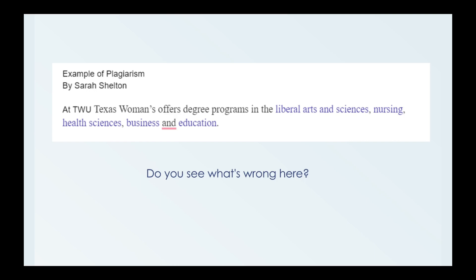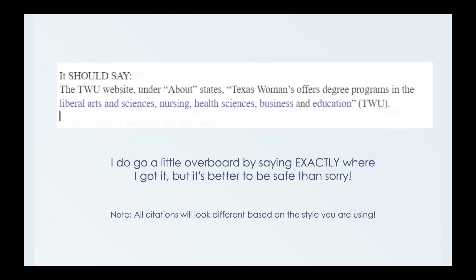This is a factual statement, and you may know this off the top of your head if you are a student, but did this exact wording come from somewhere? It should have an in-text citation — that's from Texas Women's University — with my period at the end. I go a little overboard by saying exactly where I got it, saying 'The TWU website under about,' but it's better to be safe than sorry. Using a sentence like that actually shows the reader where they can find this information, where exactly you got it.